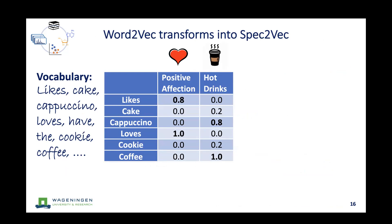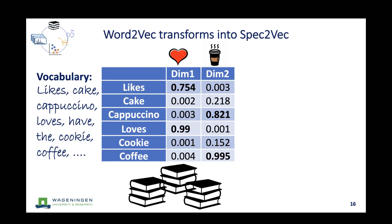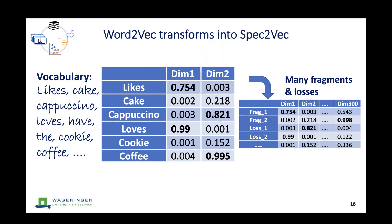In the word embedding space, we can create dimensions — for example, positive affection or hot drinks — and account for the various contributions of words to those dimensions. The computer learns these automatically, so you simply get dimension one, dimension two, and so on. In Spec2Vec, the vocabulary is much larger with thousands of different fragments and losses, and we use 300 dimensions.